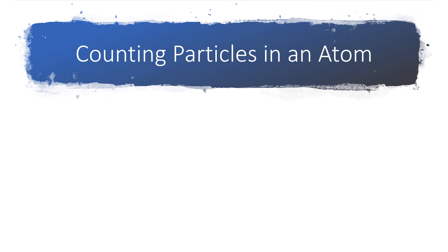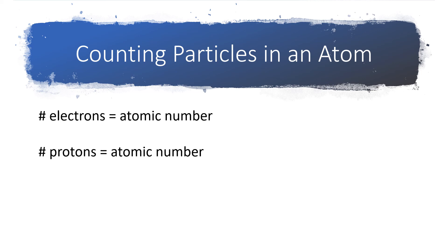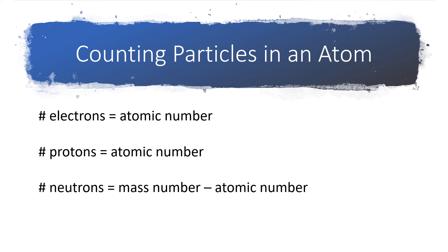When counting the particles present in an isotope: the number of electrons equals the atomic number, the number of protons also equals the atomic number, and the number of neutrons equals the mass number minus the atomic number. Note that the number of electrons being equal to the atomic number is true for neutral atoms only. In the next chapter we'll look at ions, where the number of electrons will differ from the number of protons because ions are charged, creating an imbalance between electrons and protons.